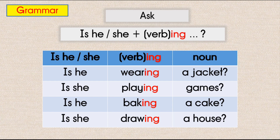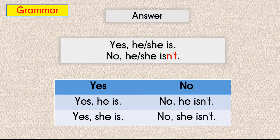We have just learned how to ask questions with 'Is he' or 'Is she' plus an ING verb. Here are more examples. Let's read them together. Now, how do we answer those questions? Let's read the yes and no answers together. Yes, he is. No, he isn't.